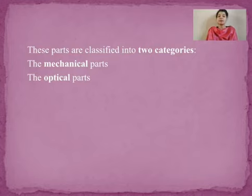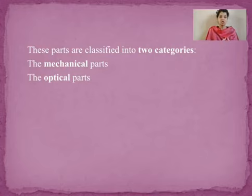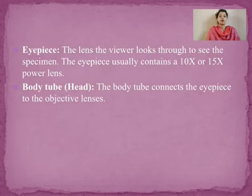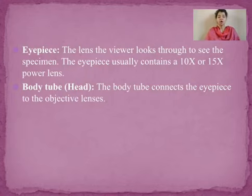The parts of a microscope can be divided into two categories: mechanical parts and optical parts. Mechanical parts help in the construction of the microscope, while optical parts help in the magnification of objects placed on the stage. The first part is the eyepiece — a lens through which the viewer looks at the object.